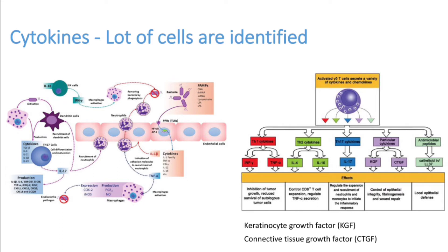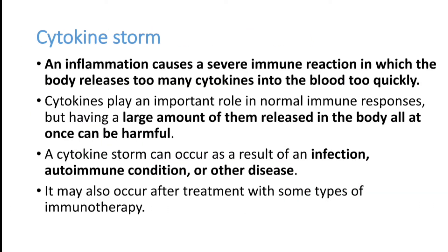When this response is dysregulated, we call it a cytokine storm. The definition of cytokine storm is an inflammation caused by a severe immune reaction in which the body releases too many cytokines into the blood too quickly. The reaction is too much and the cytokines are released very rapidly. A large amount of these cytokines can produce harm to the body because of dysregulated inflammation.